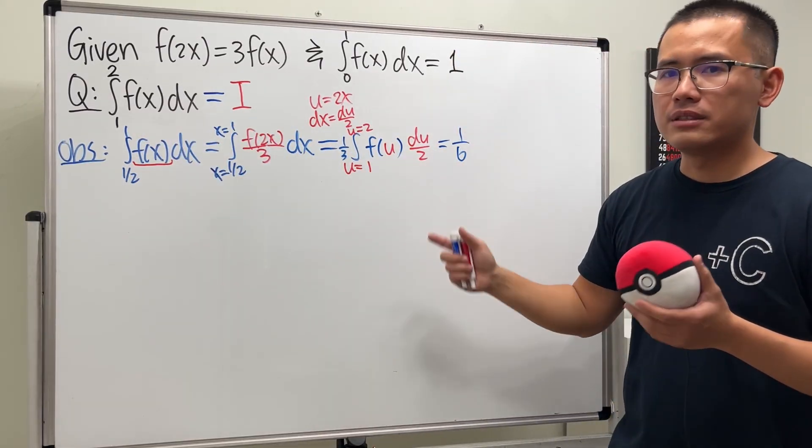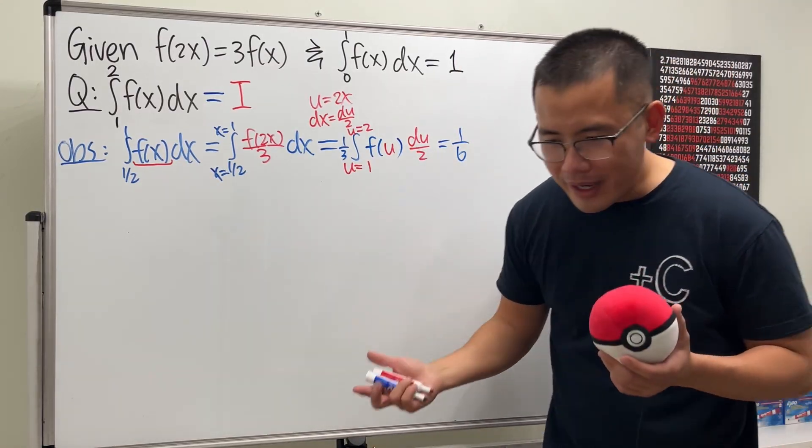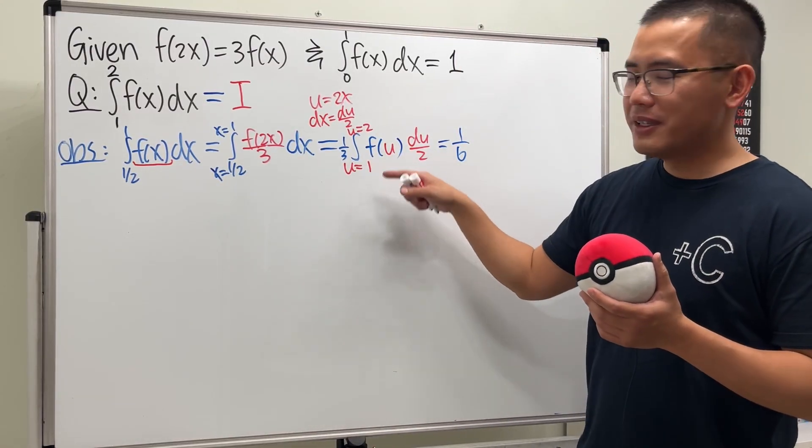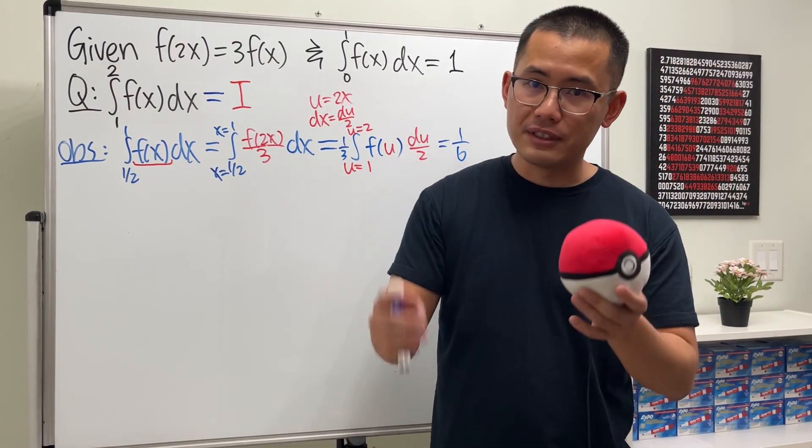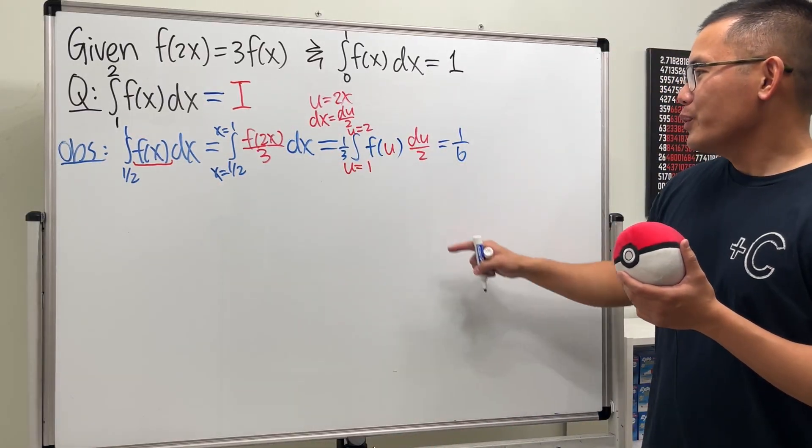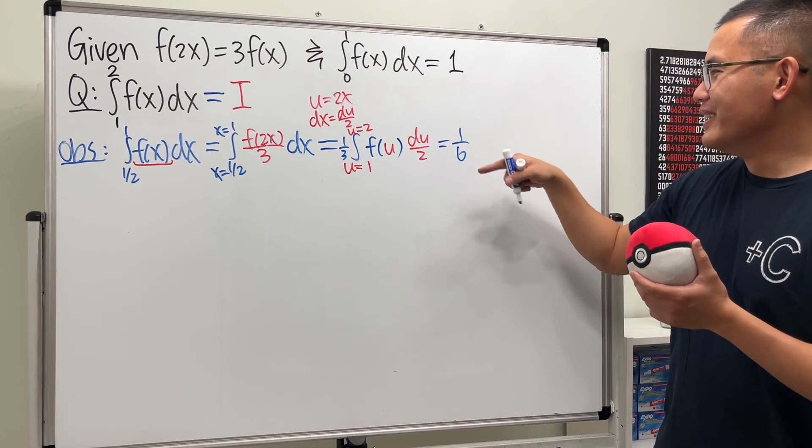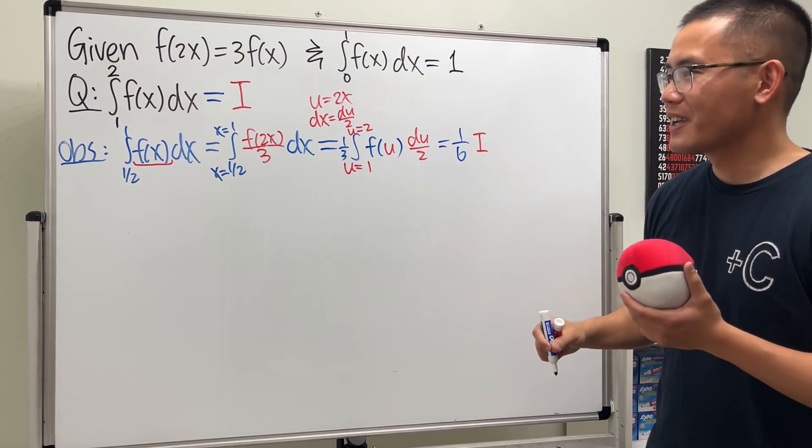And now check this out. 1 half can be brought up to the front as well. And we multiply that with 1 over 3, so we get 1 over 6. And we have the integral going from 1 to 2, f of u du. This is exactly that. The dummy variable doesn't matter.